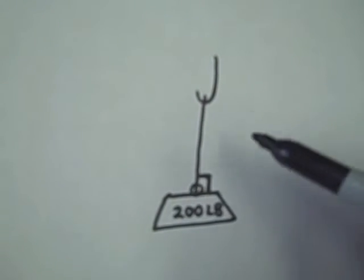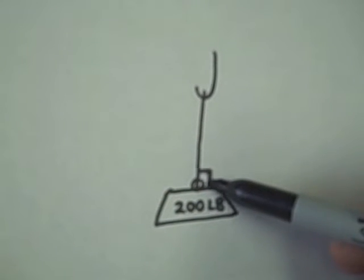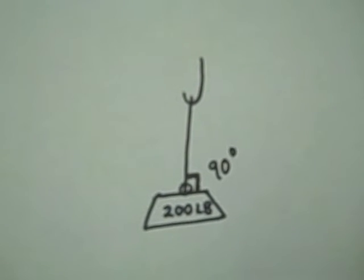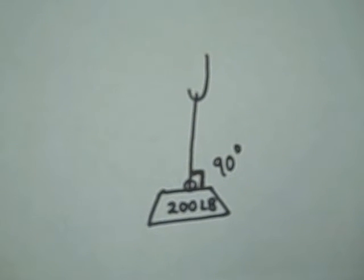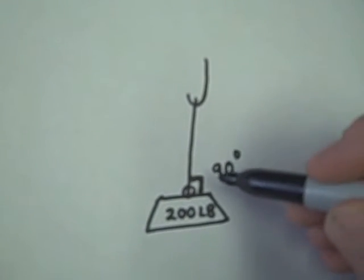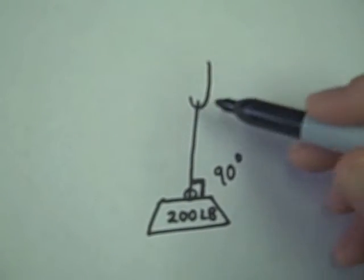What have we learned? First of all, a lift at an angle of 90 degrees will lift the most because there are no horizontal forces being exerted on that sling.